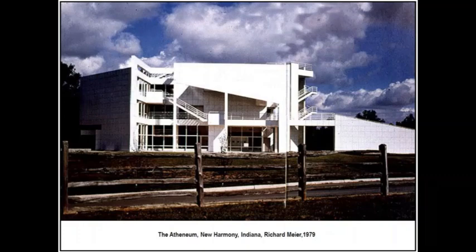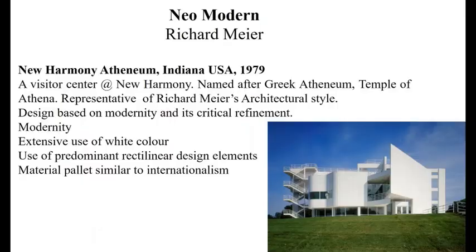Here we have the New Harmony Atheneum in Indiana, USA, built in 1979, a visitor center named after the Greek Atheneum or the temple of Athena. It is representative of Richard Meier's architectural style, and the design is based on modernity and its critical refinement. We can see a duality in his design approach: the main concept comes from Modernism, while the critical refinement of the Modernistic approach comes from Post-Modernism.